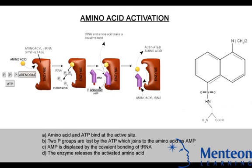Here we can see that adenosine triphosphate, when added to an amino acid, produces a reaction where you get aminoacyl-AMP plus PPi. Then aminoacyl-AMP plus tRNA gives you aminoacyl-tRNA plus AMP.